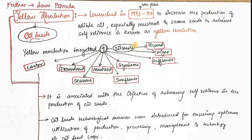The Yellow Revolution was fathered by Sam Pitroda and launched in 1986–87 during the 7th Five-Year Plan, with the aim to increase the production of edible oil. It is related to oil seeds, especially mustard and sesame. Nine oil seeds were involved: castor, groundnut, sesame, mustard, sunflower, soybean, niger and linseed. The revolution is associated with achieving self-reliance in oil seed production. An Oil Seeds Technological Mission was introduced to ensure optimum utilization of production, processing, management and technology in oil seed crops.